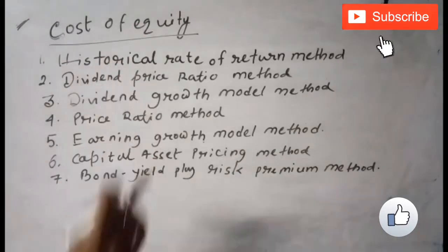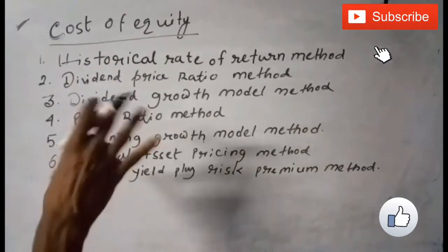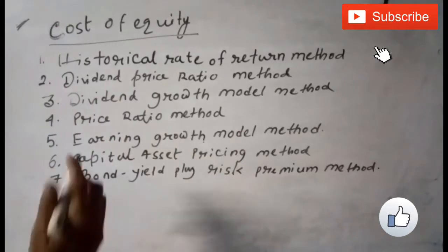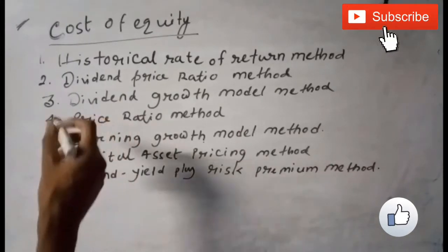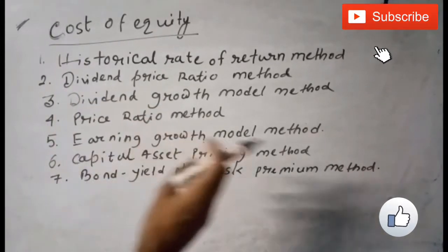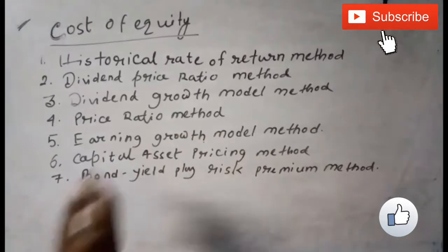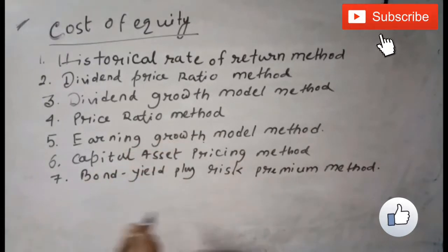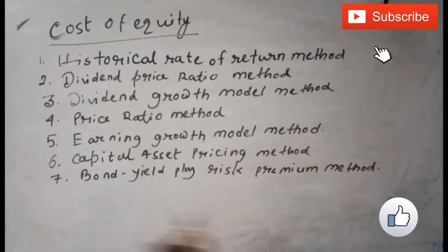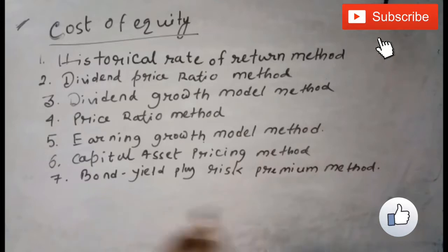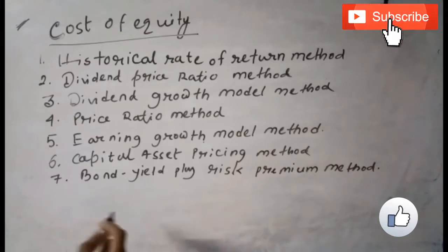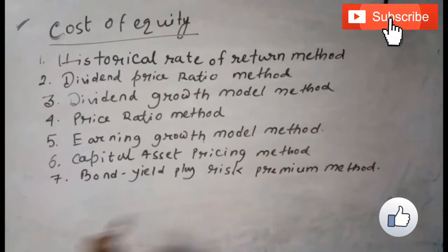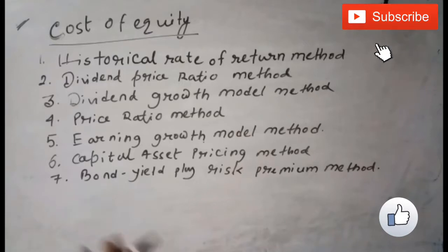For calculating cost of equity, there are six methods: historical rate of return method, dividend price ratio method, dividend growth model method, price ratio method, earning growth model method, capital asset pricing method, and last but not the least, bond yield plus risk premium method.